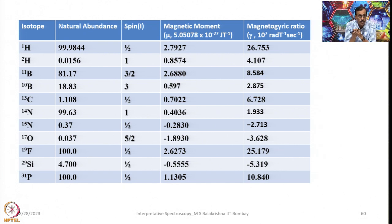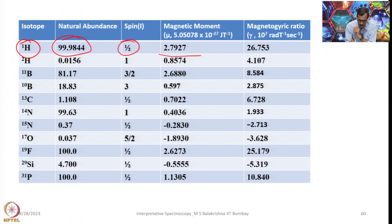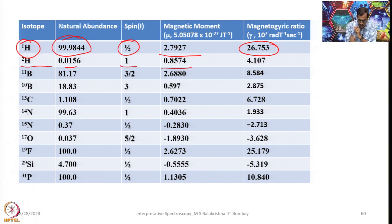For different isotopes I have provided their natural abundance, spin, gyromagnetic ratio, and magnetic moment. Focusing on 1H: it is almost 100% abundant at 99.9844%, with I equals half and magnetic moment of 2.7927, and gyromagnetic ratio of 26.753 times 10 to the 7 radians per tesla per second. For 2H (deuterium), a very small amount exists, I equals 1, and its magnetic moment and gyromagnetic ratio are also given - the gyromagnetic ratio is almost 6 times less than that of the proton.